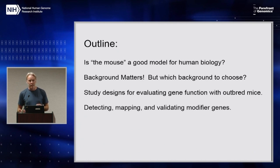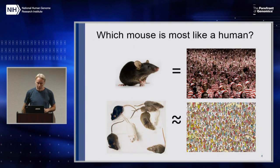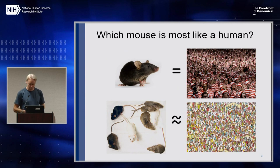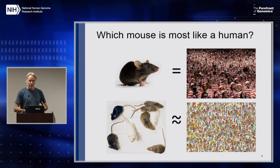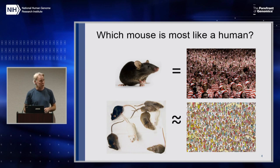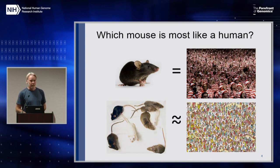And then I'm going to propose some study designs that I think are eminently practical and show you how those study designs can lead us to better understanding of function. So as a mouse geneticist, I often encounter people who want to break into the field and study their favorite trait in the mouse, and they always ask me: which mouse is most like the human? And the answer, obviously, is C57 Black 6J or N — take your choice.